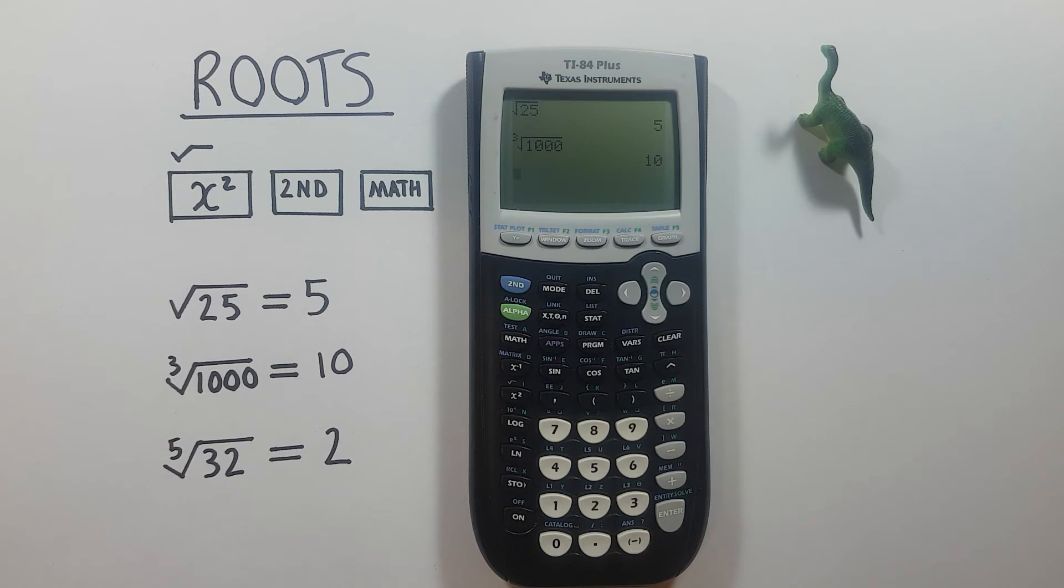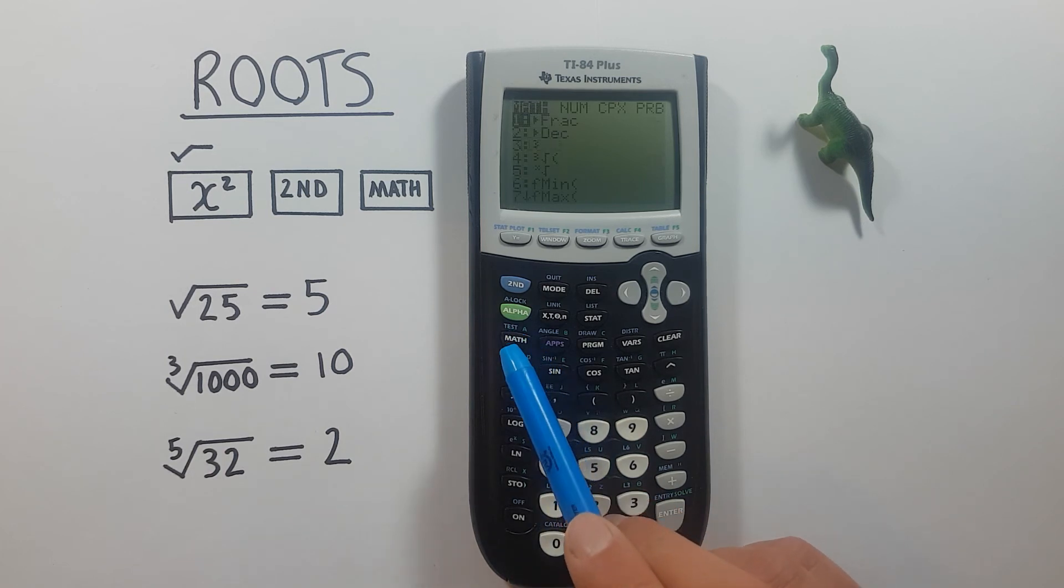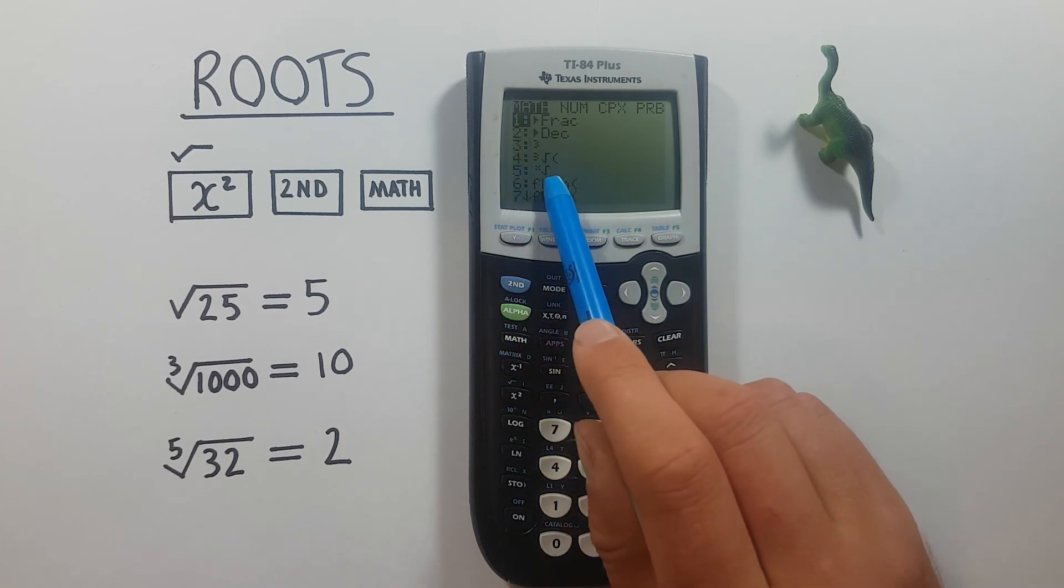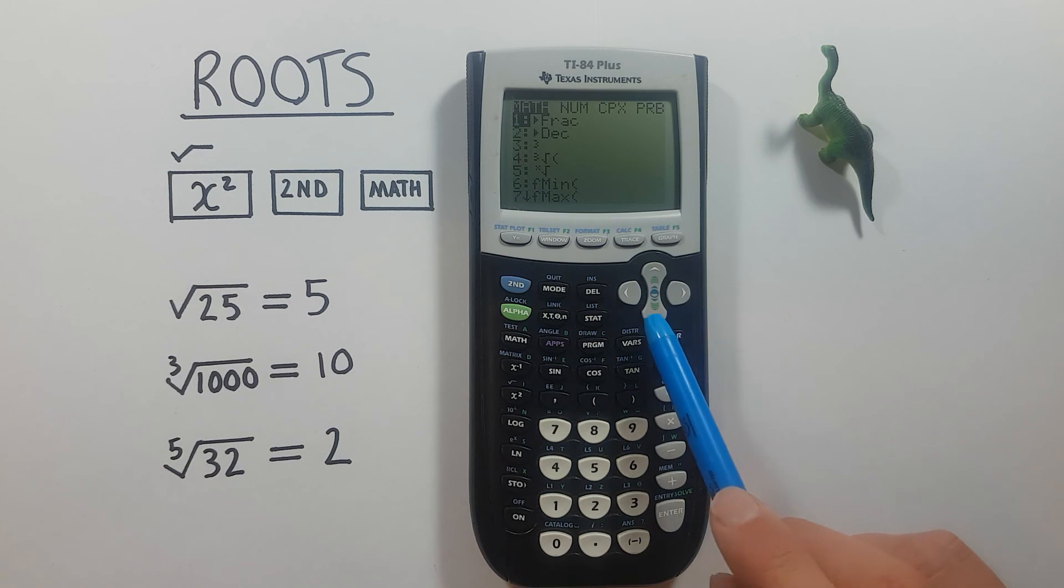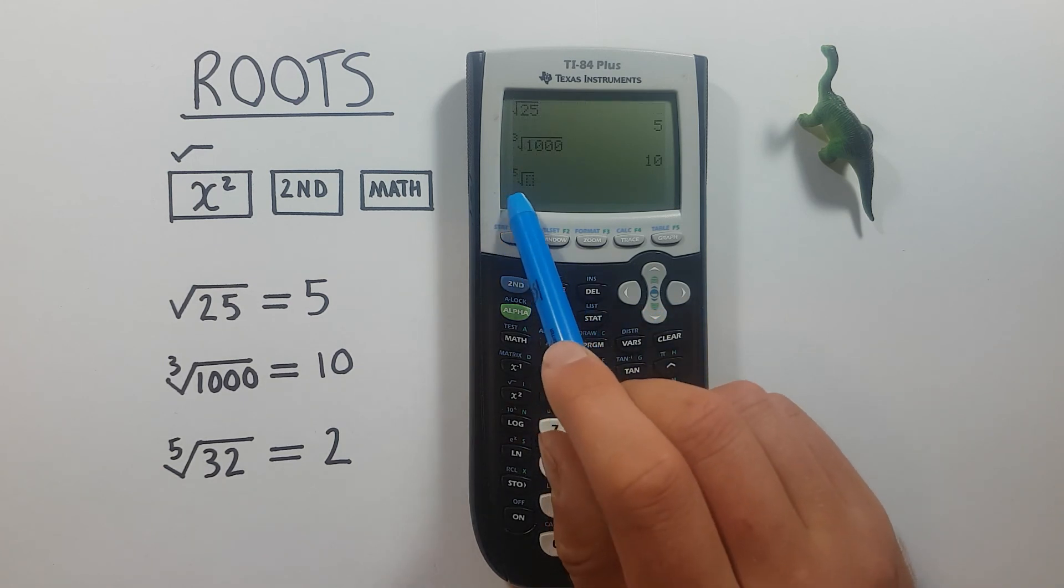For numbers that aren't square or cube roots, you have to start by entering the root number. So for example, if we want to find the fifth root of 32, we start by pressing 5, then the math key again, and we go down to the fifth option. We can either scroll down to it or press 5.